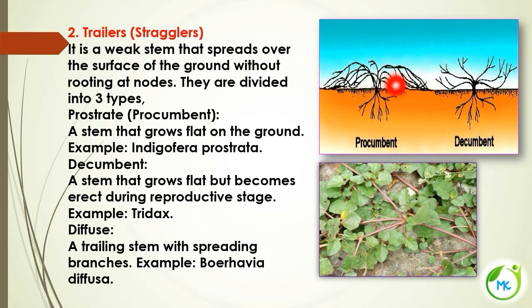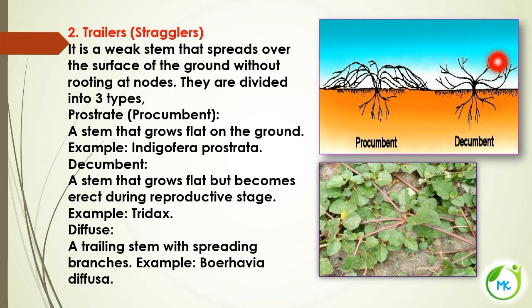If the stem grows flat on the ground, it is called prostrate. Decumbent also grows flat but becomes erect at certain stage — that is during the reproductive stage. The third kind is diffuse, where the stem is trailing with spreading branches.